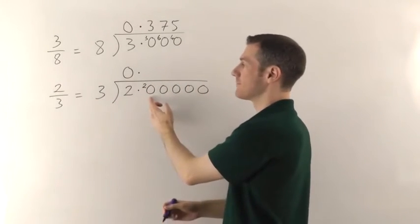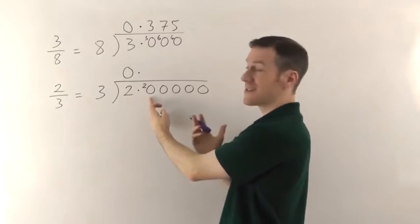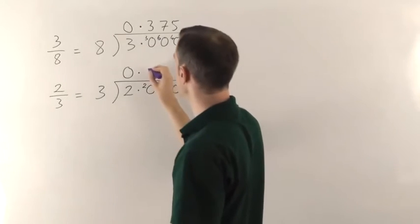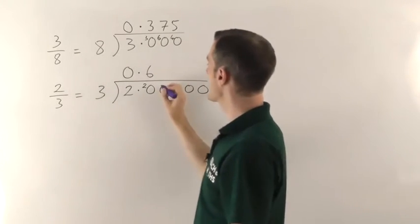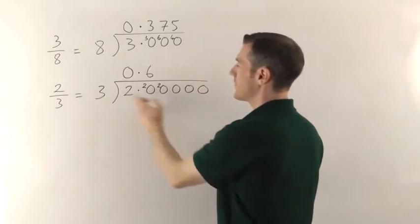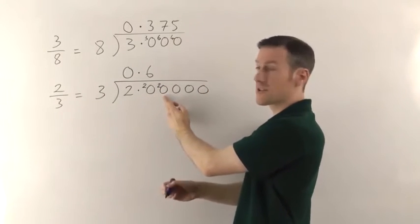So then you say how many 3s in 20? Well 3 6s would be 18 and the remainder then is 2 which will go on the next 0 and 3s into 20 again. Well we've just done that one that's going to be 6.